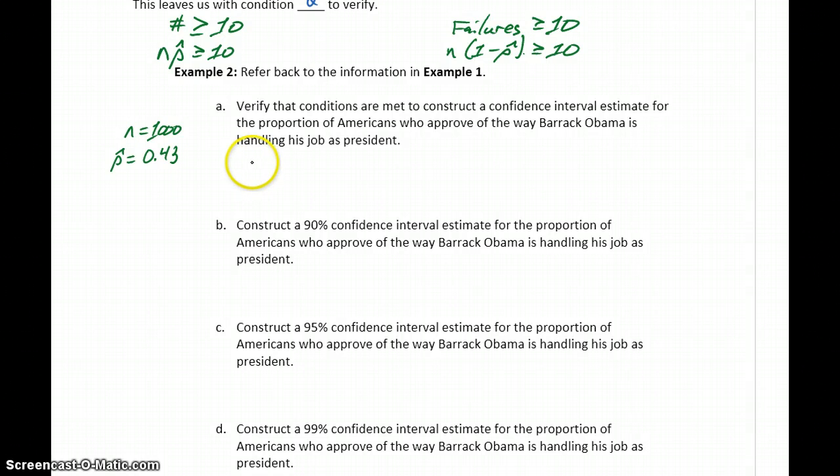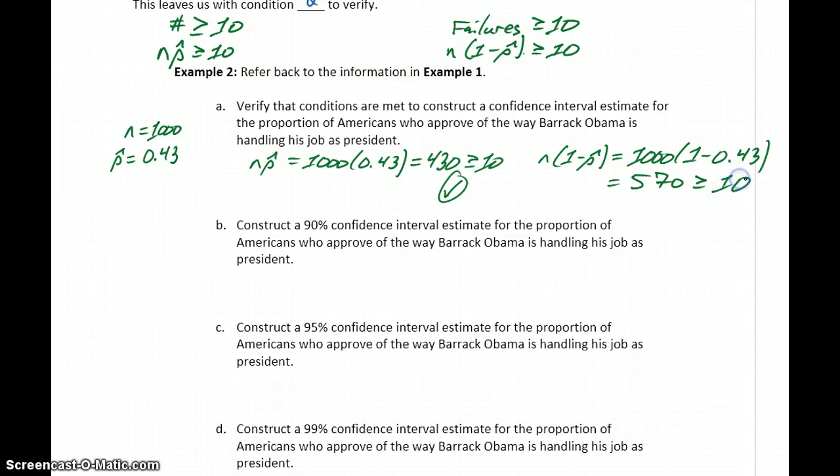To get our number of successes, we take our sample size times p-hat. In this case, 1,000 times 0.43 to get 430. That's greater than or equal to 10, so we can check that condition. We also need to consider n times 1 minus p-hat, which is our sample size times the proportion of people who didn't approve. So 1,000 times 1 minus 0.43 equals 570, which is also greater than or equal to 10. Our two conditions are met.